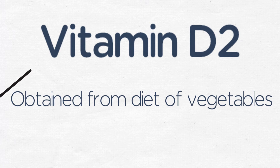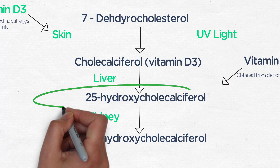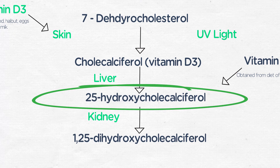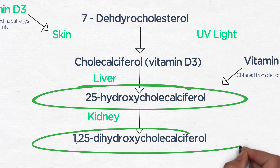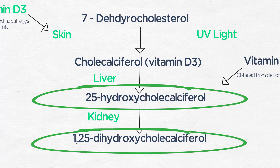In the liver, cholecalciferol is activated in the first step to 25-hydroxycholecalciferol. This circulates, and in the kidney, the second step of the activation occurs, where 1,25-dihydroxycholecalciferol is synthesized, and this is the biologically active form of vitamin D.